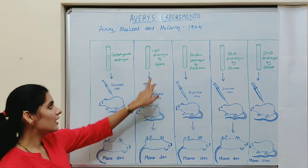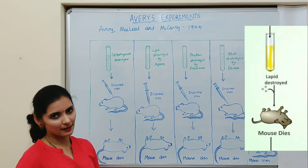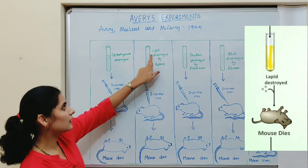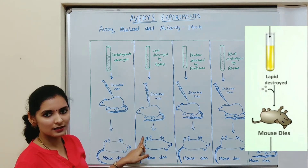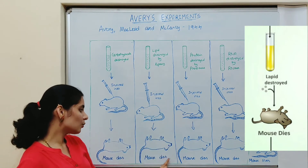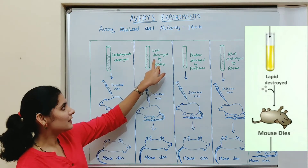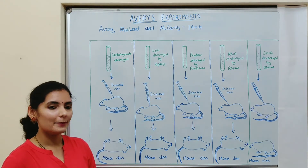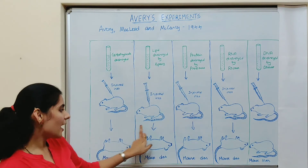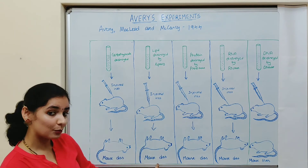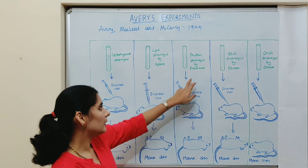In the second experiment, lipases — enzymes that digest lipids — were used. All lipids present in the extract were digested by lipase, and the same procedure was carried out. The result was that the mouse died of pneumonia, showing that transformation still occurred. This indicates that lipids are not the transforming principle, since transformation happened even in the absence of lipids.